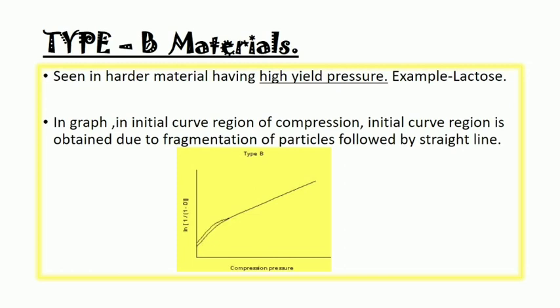So in type B material, direct compression doesn't take place. At first, fragmentation of particle takes place. It means bigger particles break down into smaller particles, then compression is done by applying pressure. That's why we obtain a curve in the starting of the graph.